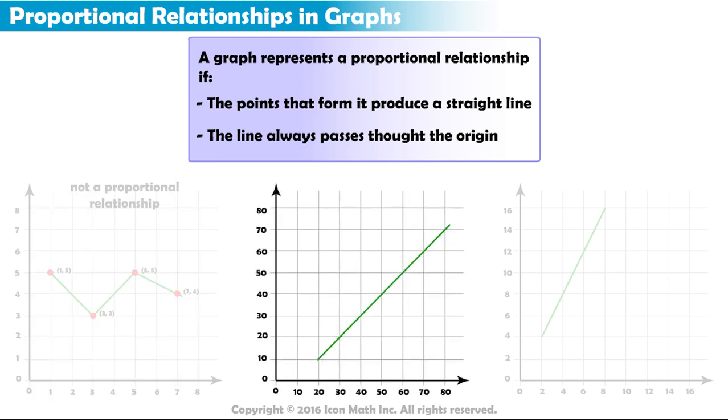The second graph is formed by ordered pairs that produce a straight line. Does that mean it represents a proportional relationship? Be careful! Notice that the straight line formed does not pass through the origin. Hence, this graph does not represent a proportional relationship either.